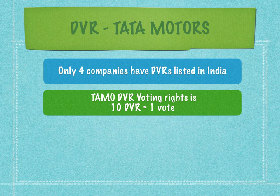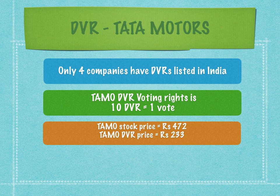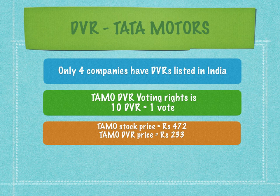TAMO DVR voting rights: 10 DVRs equal one vote. So in TAMO common stock, one stock equals one vote, but in the DVR case, 10 DVRs equal one vote. Obviously the price of Tata Motors common stock will be higher compared to the DVR, because the DVR holder has one-tenth the voting rights compared to common stockholders. So, for compromising 90 percent of voting rights, obviously the DVR holder needs to be compensated by something — otherwise why would they invest in the DVR?